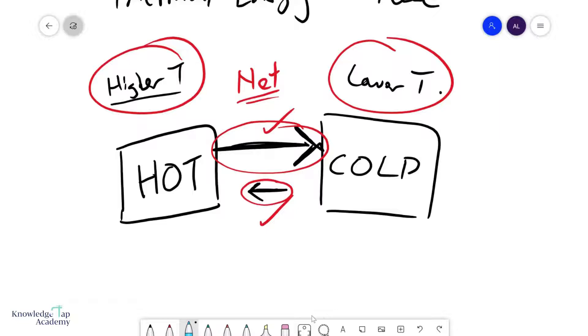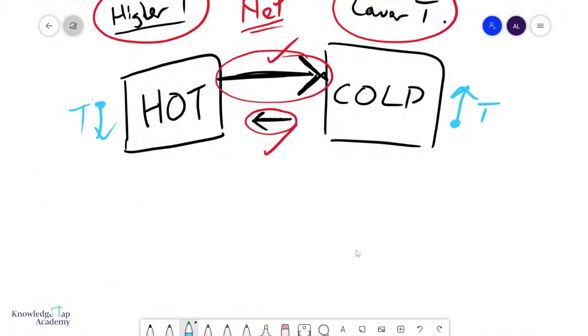Now as this happens, you expect the temperature of the colder body to increase, and the temperature of the hotter body to decrease. And so eventually what will always happen when two objects or bodies are in thermal contact is that this will happen until the two bodies are at the same temperature.